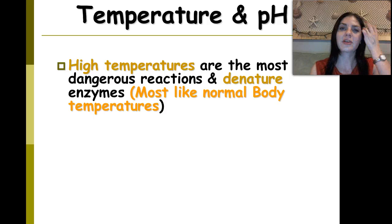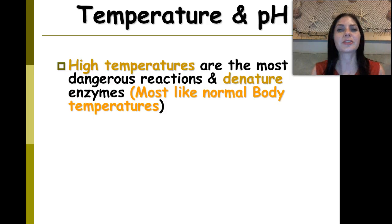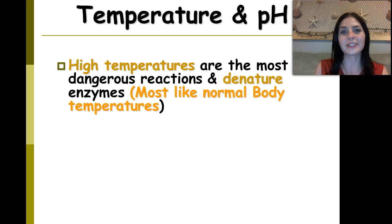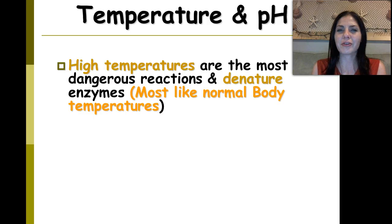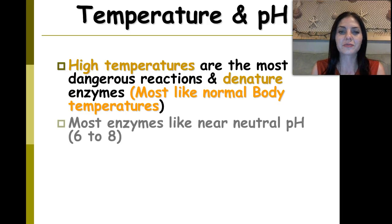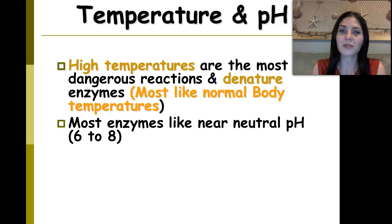Most enzymes function at about body temperature, which is 98.6 degrees Fahrenheit and about 37 degrees Celsius. Most enzymes also like a near-neutral pH, somewhere between 6 and 8, with water being a pH of 7.